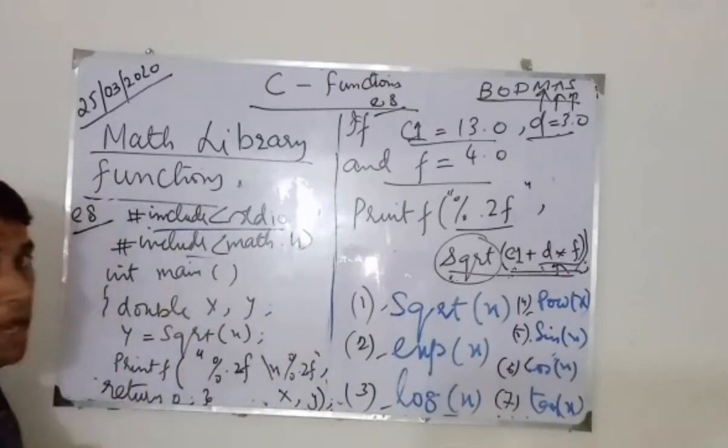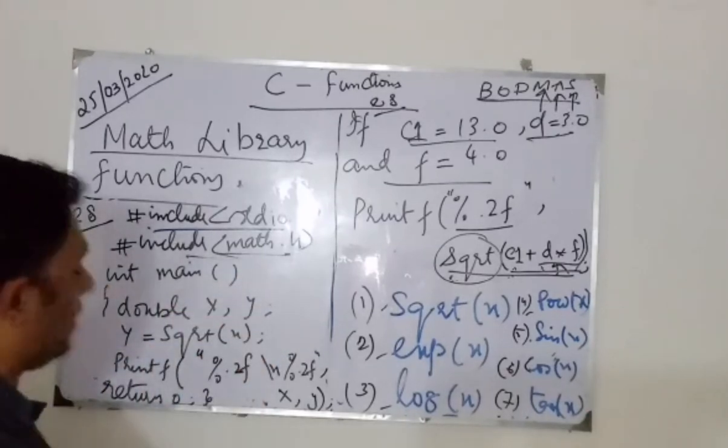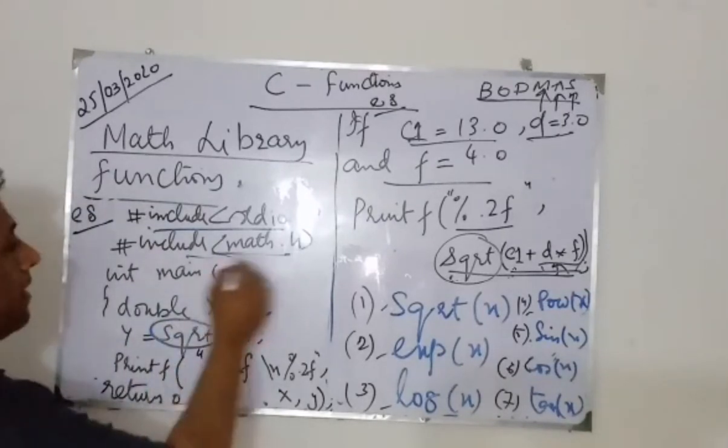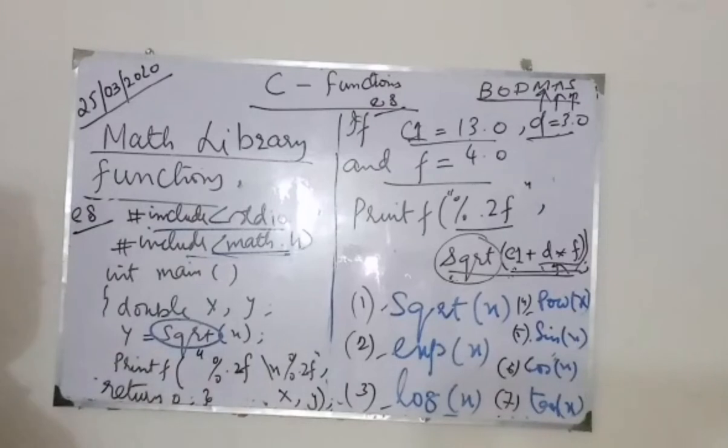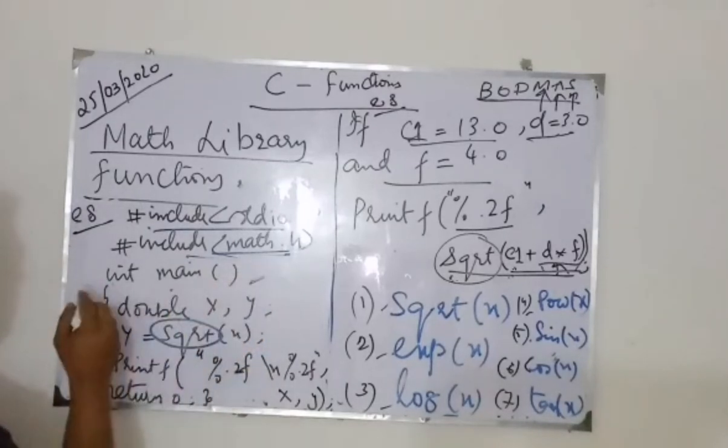First, we have included header file which is your standard input-output header file. Second, you use math.h header file which is the most important one. Because if I don't use this header file, I can't use this function here. First, I have to use the header file. Then you have to use the main function.